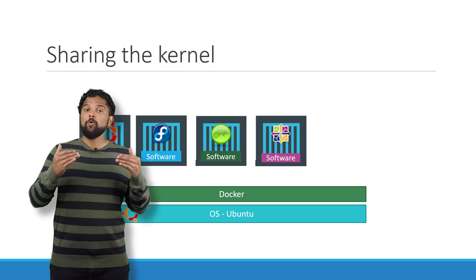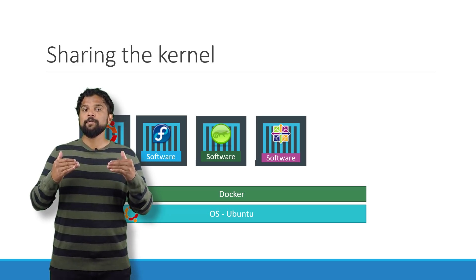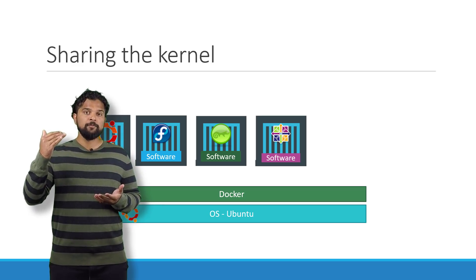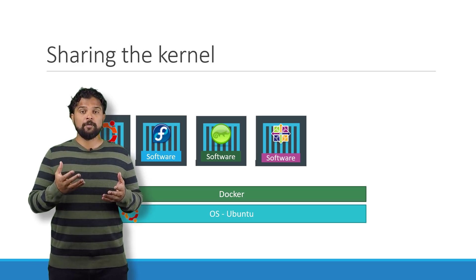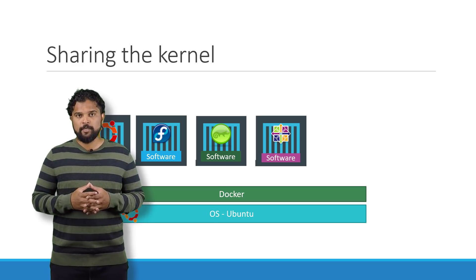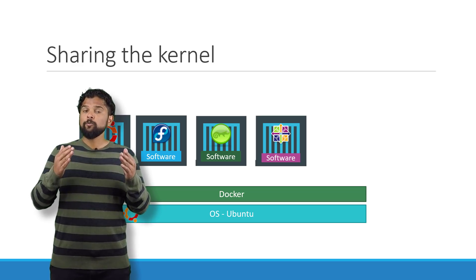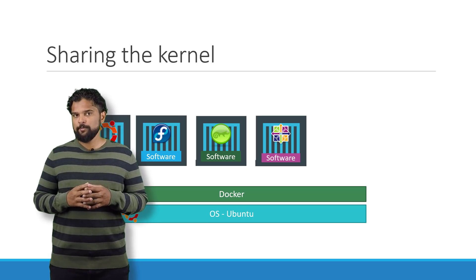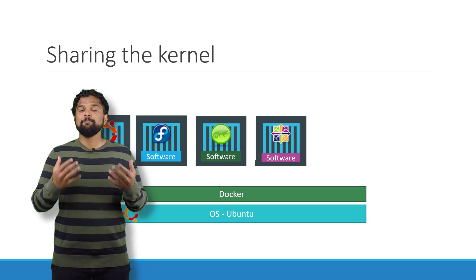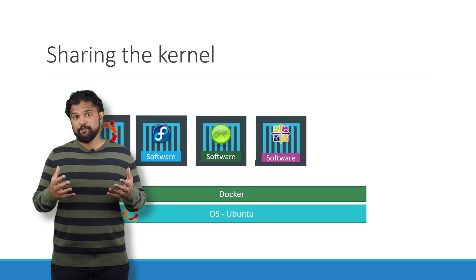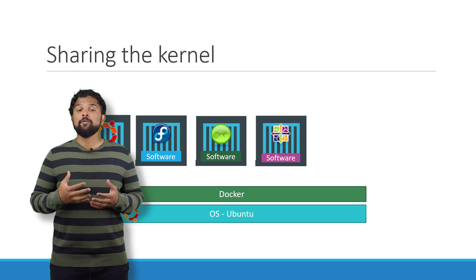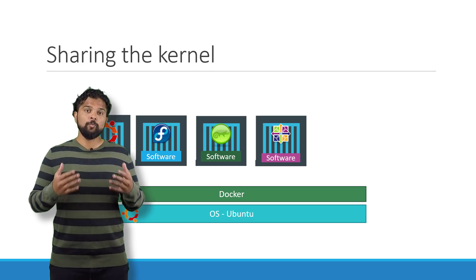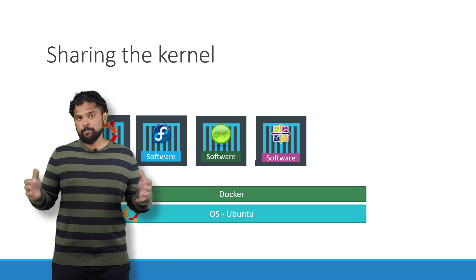If the underlying operating system is Ubuntu, Docker can run a container based on another distribution like Debian, Fedora, SUSE, or CentOS. Each Docker container only has the additional software that differentiates these operating systems, and Docker utilizes the underlying kernel of the Docker host which works with all the operating systems above.